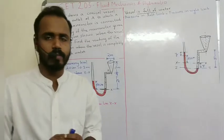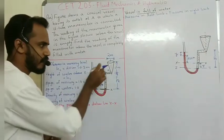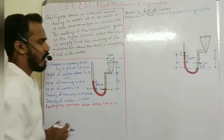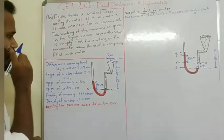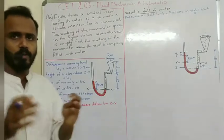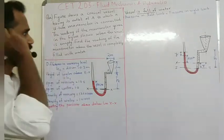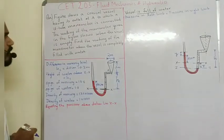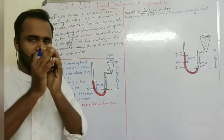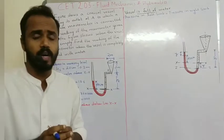We will discuss a problem with a U-tube manometer. The figure shows a conical vessel having its outlet at A, to which a U-tube manometer is connected. The manometer reading when the vessel is completely empty is 20 cm. We need to find the reading of the manometer when the vessel is completely filled with water.